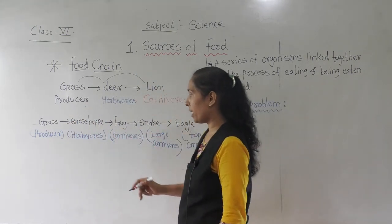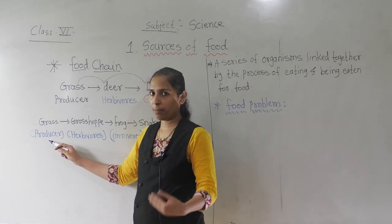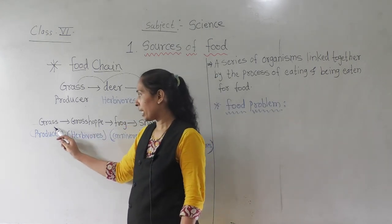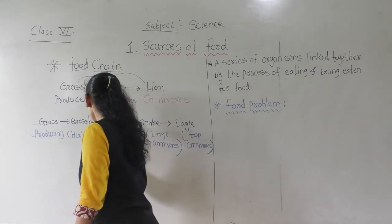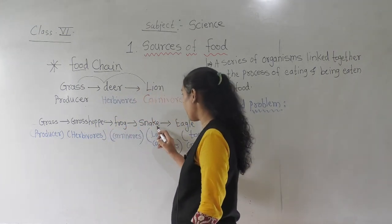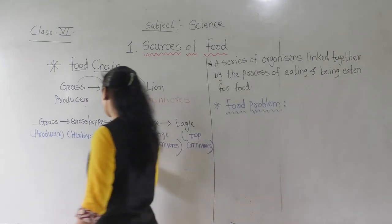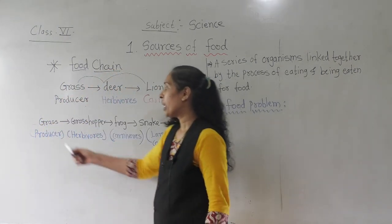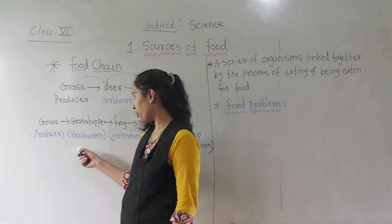We can also give one more example. Here, grass is the producer because it makes its own food. What is the food of the grasshopper? That is grass. This grasshopper is eaten by the frog, and this frog is eaten by the snake, and the snake is eaten by the eagle. So in this way, all these animals depend on each other for food. Grass is the producer, and the grasshopper is a herbivore.